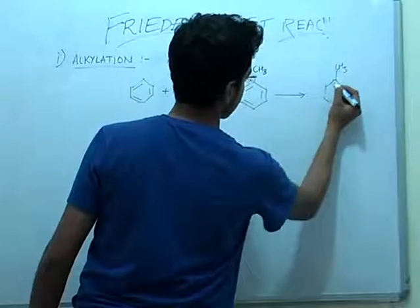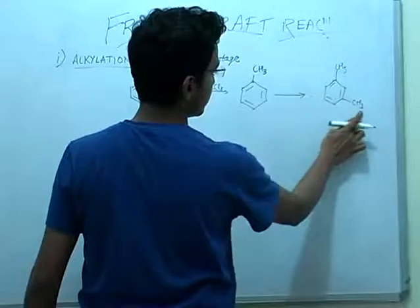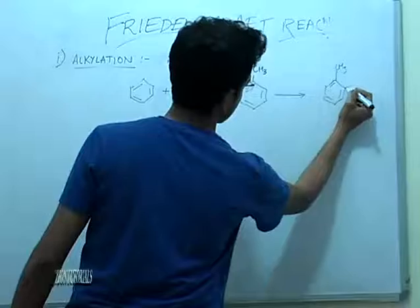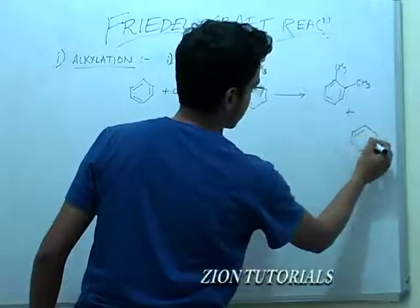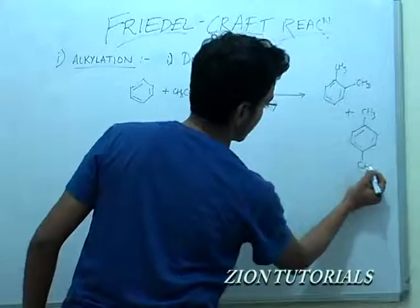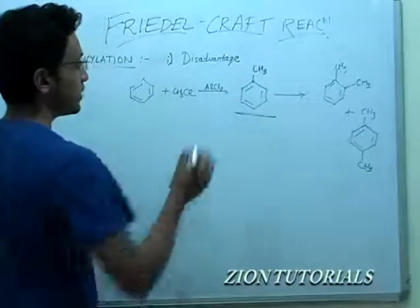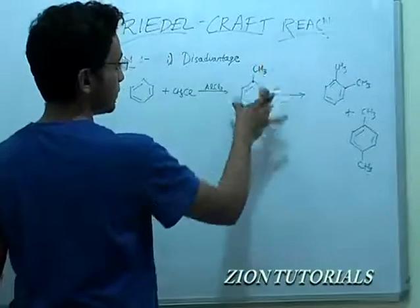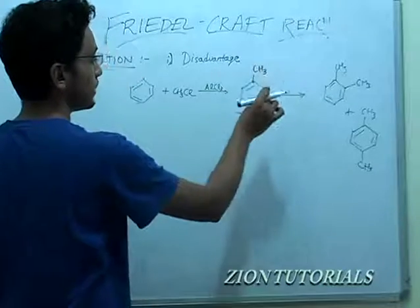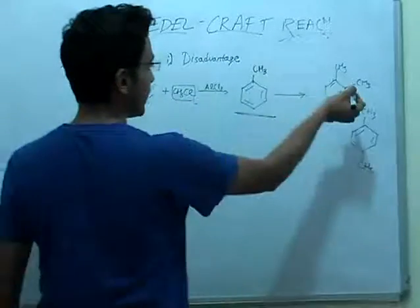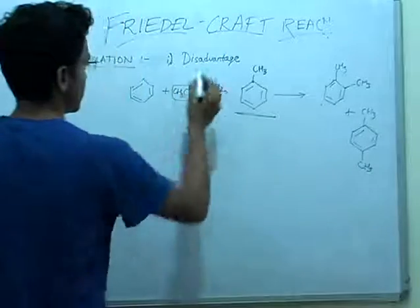So more alkylations will occur, giving doubly alkylated and multiply substituted products at ortho or para positions. The disadvantage is that we cannot stop at the monoalkylation step, because the CH3 group is an activating group making the ring more nucleophilic. So we will get poly-substituted products. This is the major disadvantage of Friedel-Crafts alkylation.